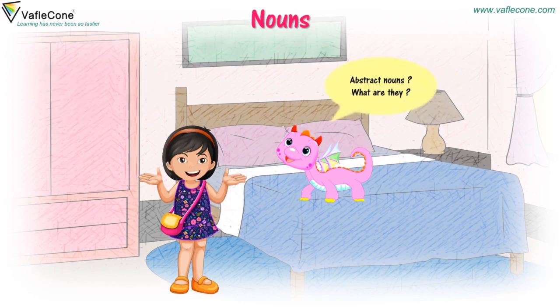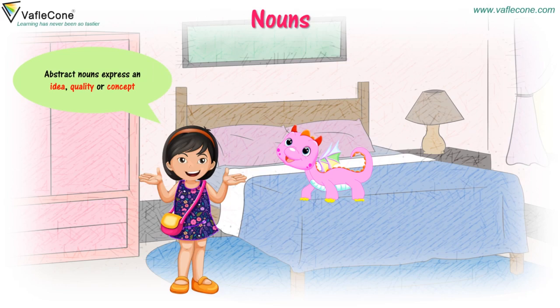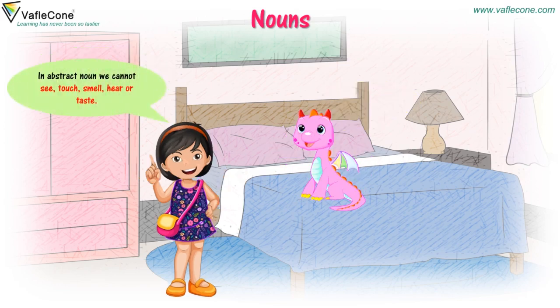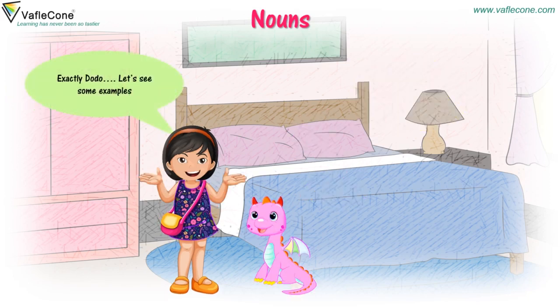Abstract nouns - what are they? I will tell you, Dodo, have patience my boy. Abstract nouns express an idea, quality or concept. In abstract nouns, we cannot see, touch, smell, hear or taste. So, Jiya, you mean nouns that can be thought or felt? Exactly, Dodo.